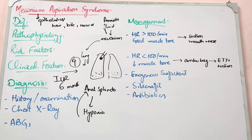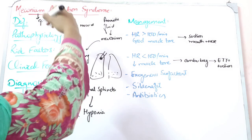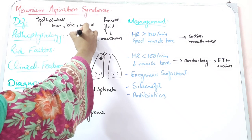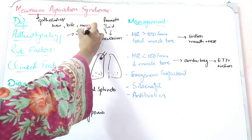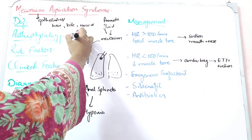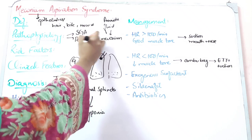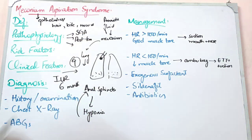Meconium aspiration syndrome is more common when children are small for gestational age, post-term, or post-maturity age. Maternal diseases also increase the risk of meconium aspiration syndrome.